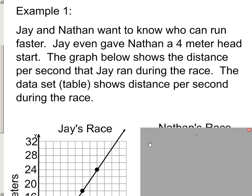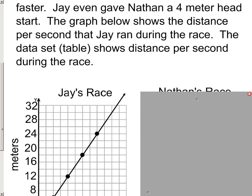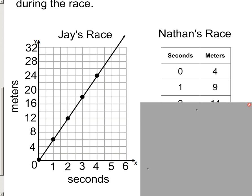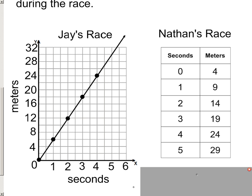So basically, we've got two different formats that are going to be used to show this. Here's Jay, and here's that graph that we're talking about. And this is his information of meters per second. Over here is Nathan, and this is the data set, or basically a table. So we've got two different functions shown here, but they're not shown in the same way.